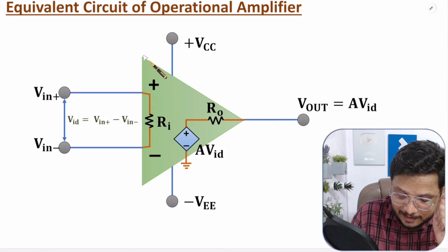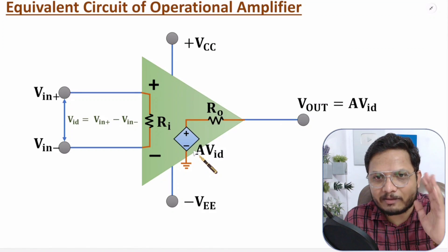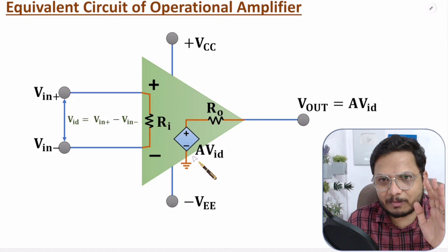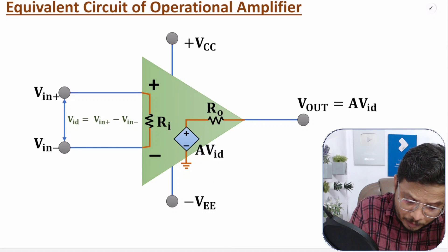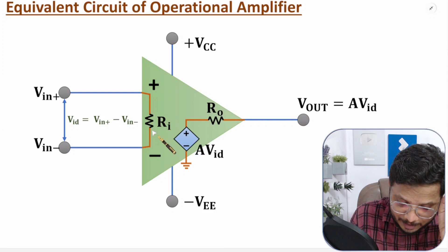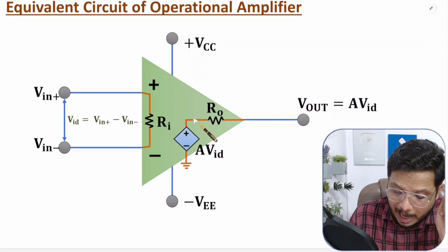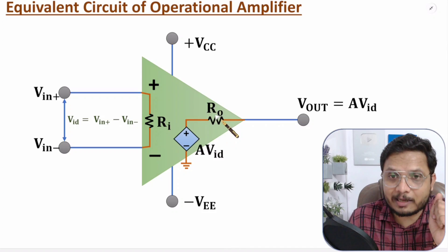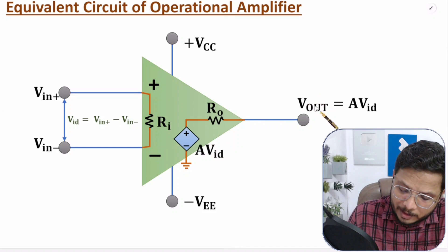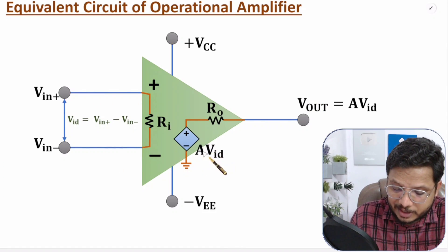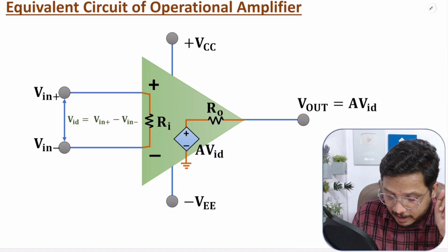The amplification factor A is very high — ideally infinite, but practically it can be in the range of 1000. The output resistance Ro is in series with the output terminal — ideally zero, but practically it has a small value. So in the equivalent circuit: Ri is high (practically in megaohms), Ro is low, and the output is the difference Vid multiplied by gain A. Remember, the output cannot go beyond plus VCC and minus VEE.